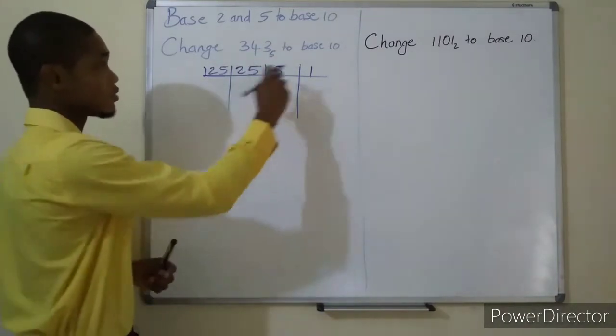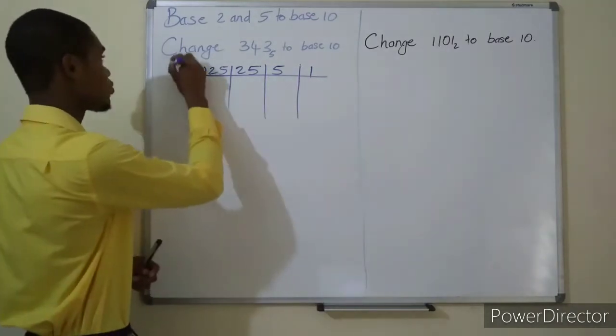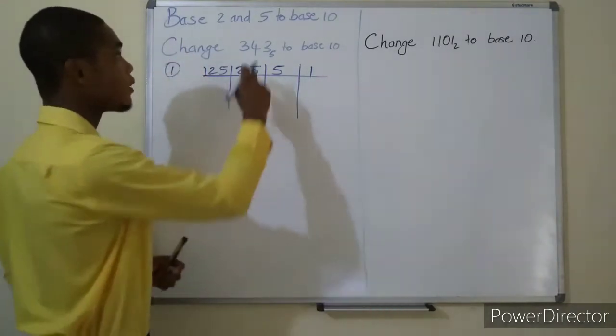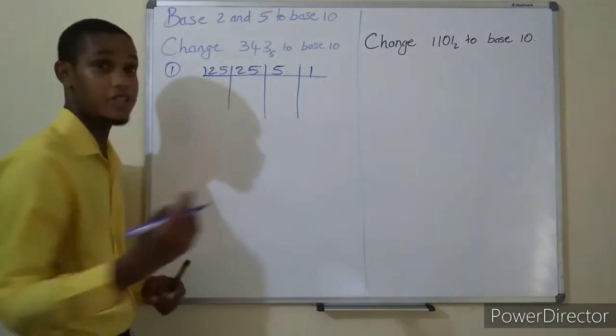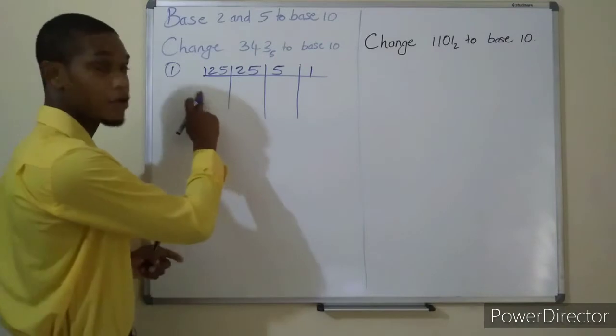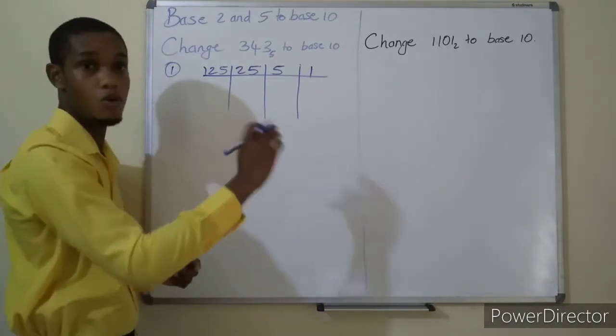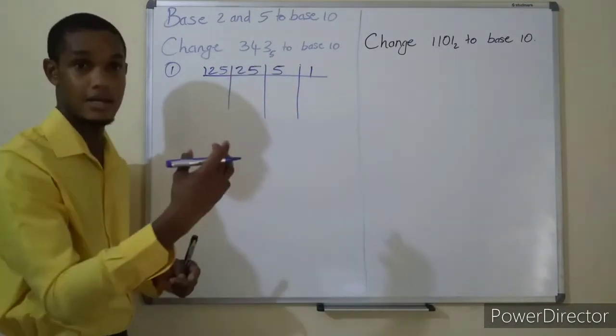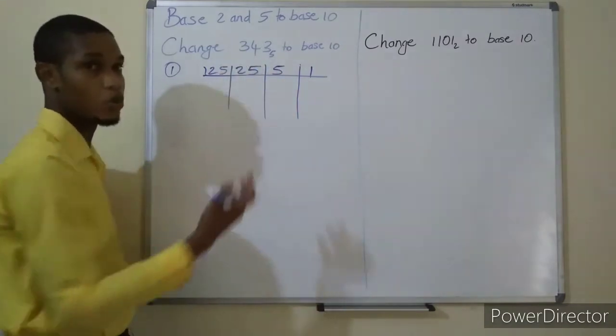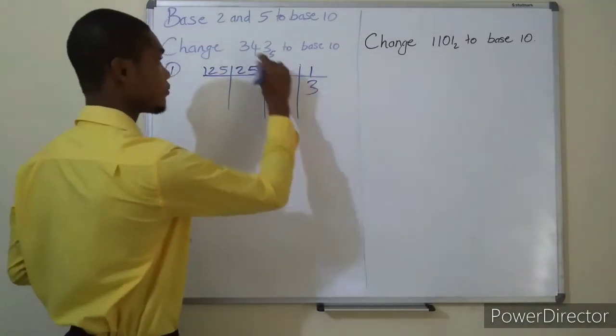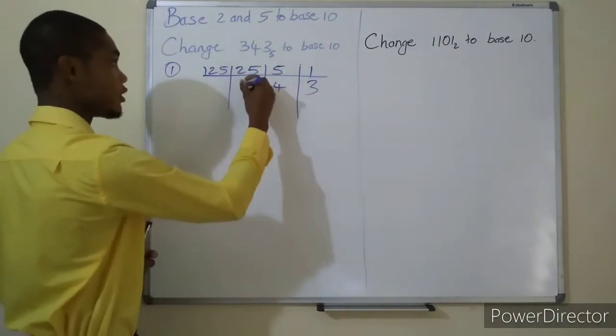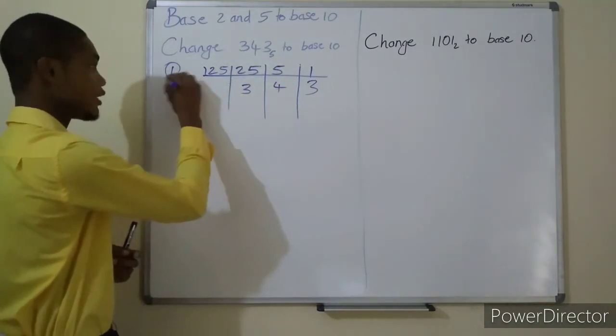When you get your table, so this would be step one. Step two would be filling in these digits. You generally start filling in from your right to your left, as you don't want to start from your left to right and then when you're almost finished realize that you missed a place. So three, then four, then three. So that's step two, filling in your digits.